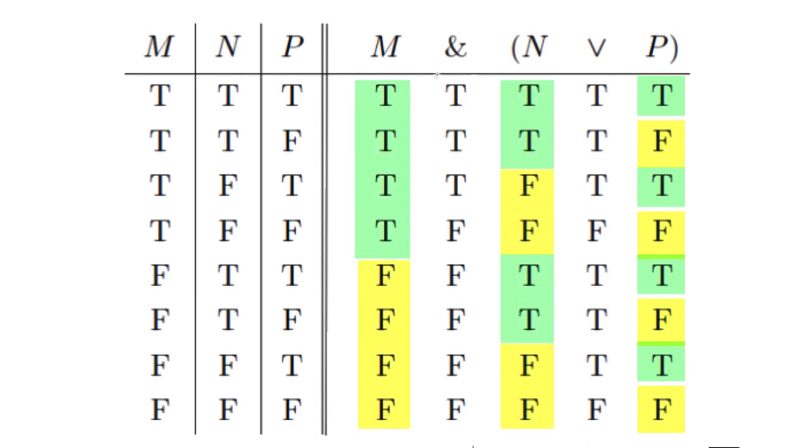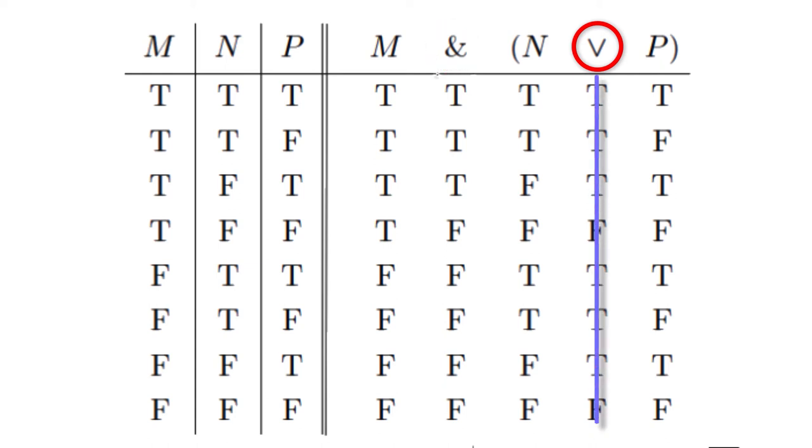Once that's done, we can proceed to calculate the values for the sentence connectives. We start with the V, since it has a smaller scope than the main connective, which is the ampersand. Once we've input those values, we can determine the values for the conjunction as a whole, as in the circled column.